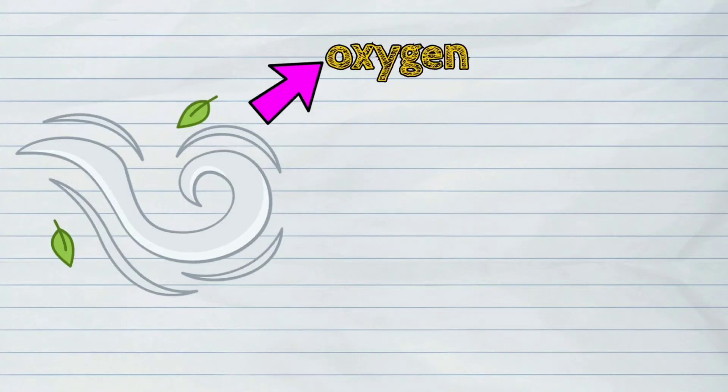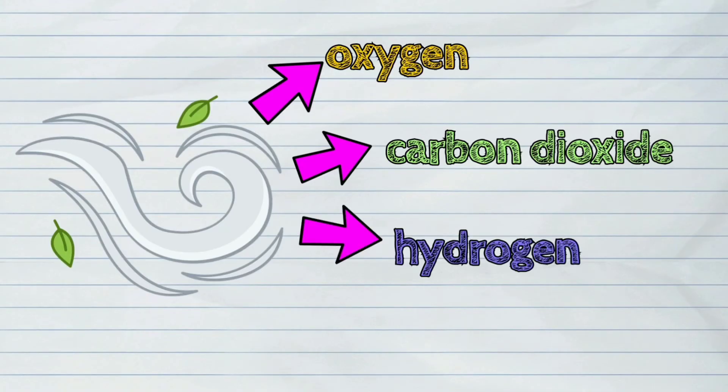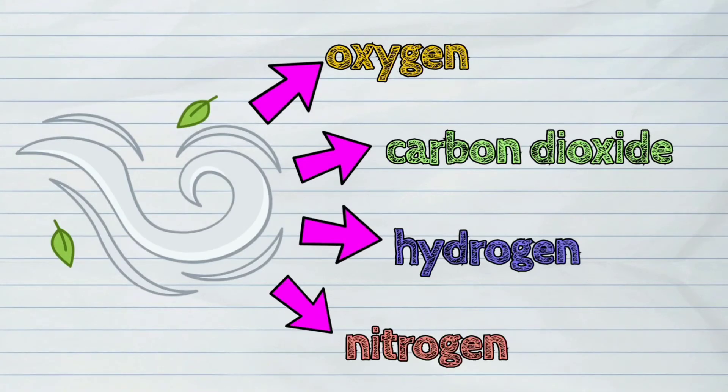Air is also one of the examples. It is a mixture of different gases like oxygen, carbon dioxide, hydrogen, and nitrogen.